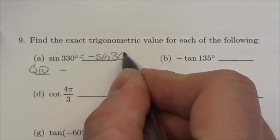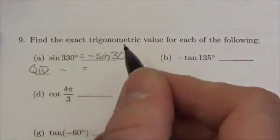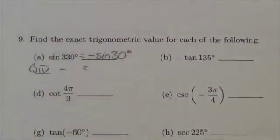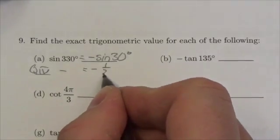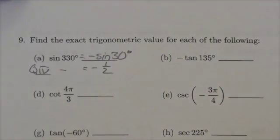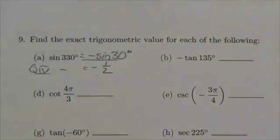This is going to be sine of 30 degrees. Now I think back to my unit circle or my special triangles - however you have memorized this, you're going to have to memorize these values. The sine of 30 degrees is one-half, so the answer is that sine of 330 degrees is negative one-half.